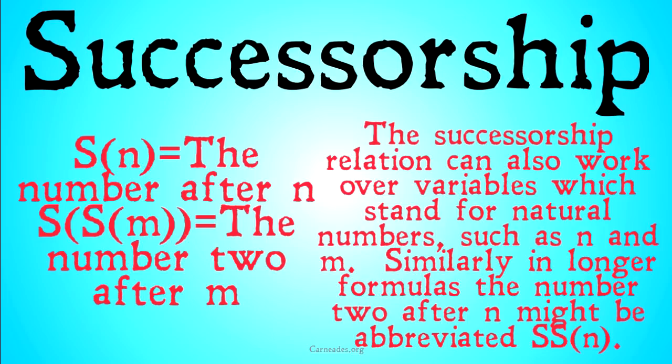We will also add two new operations, addition and multiplication, but it's important to note that because we haven't defined these operations yet, you're not allowed to use them in the standard ways that we would expect. We haven't shown a way that you can prove that 1 plus 2 actually equals 3, or 0 times 2 actually equals 0. We're going to need rules to logically prove those statements. You can't just assume that they work because you already have an understanding of addition and multiplication.